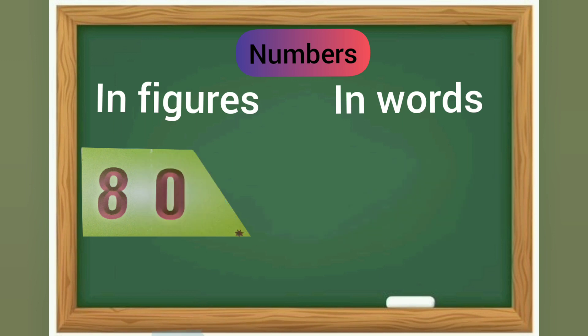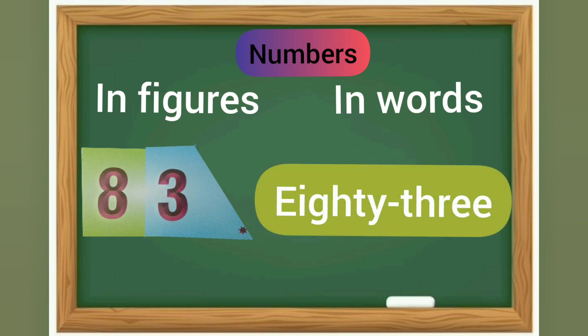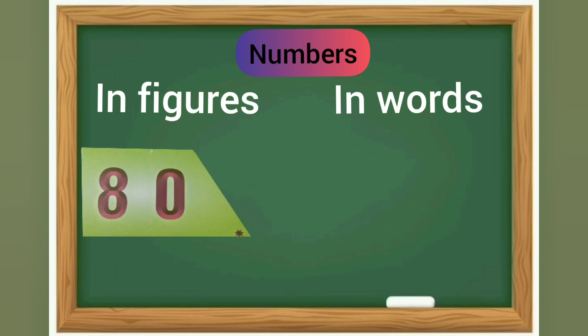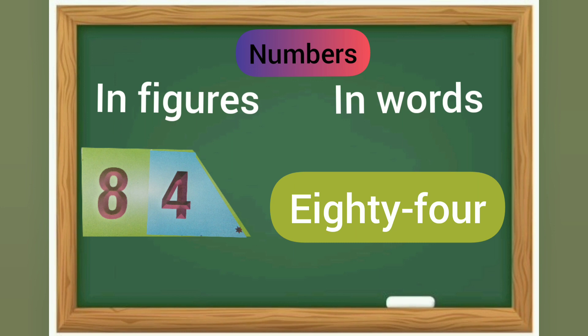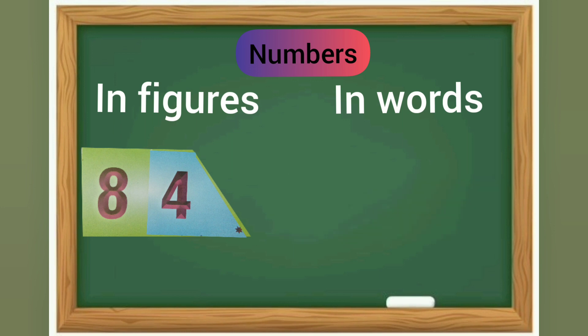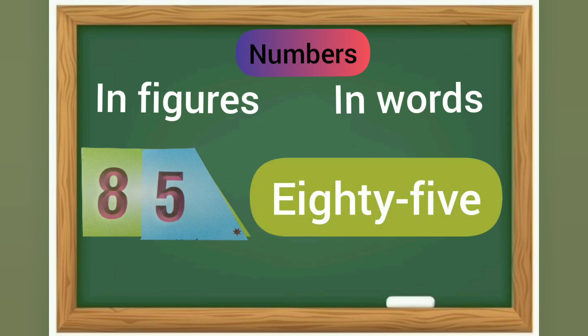80 and 3 is 83. In words it is E-I-G-H-T-Y T-H-R-E-E, eighty-three. 80 and 4 is 84. In words it is E-I-G-H-T-Y F-O-U-R, eighty-four. 80 and 5 is 85. In words it is E-I-G-H-T-Y F-I-V-E, eighty-five.